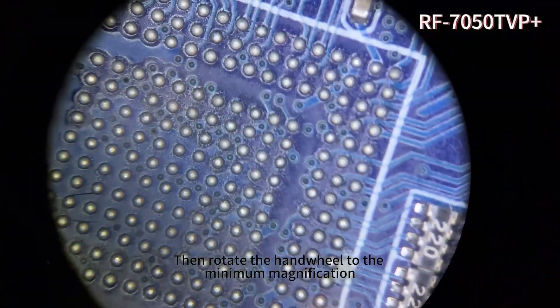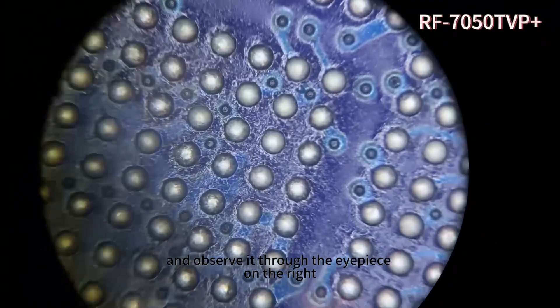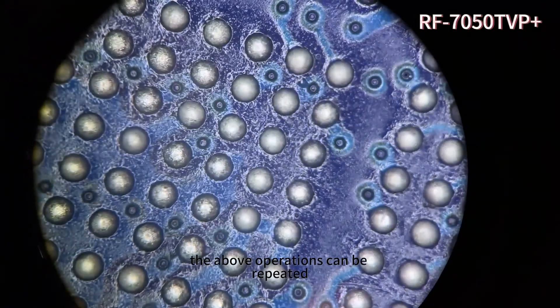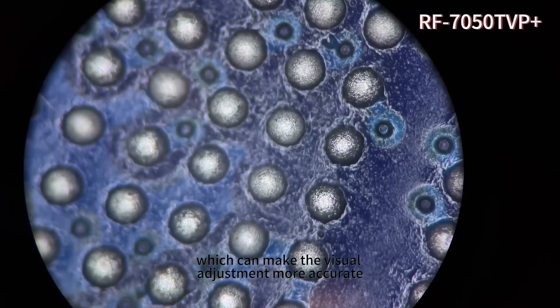Then rotate the handwheel to the minimum magnification and observe it through the eyepiece on the right. If it is not clear, the above operations can be repeated, which can make the visual adjustment more accurate.